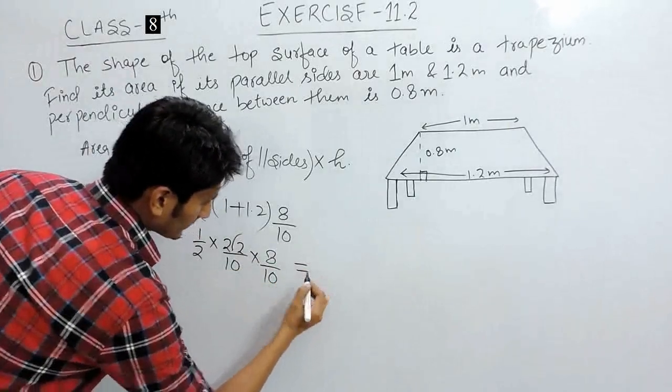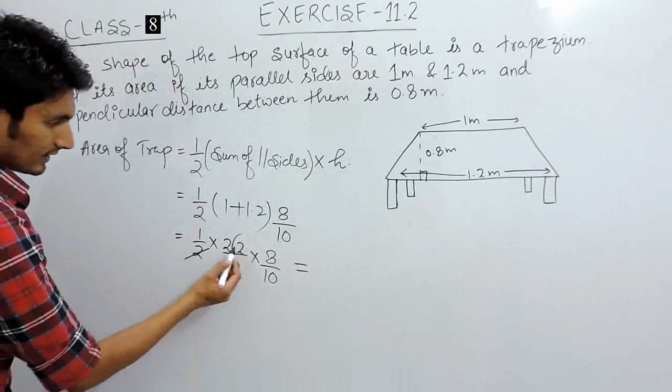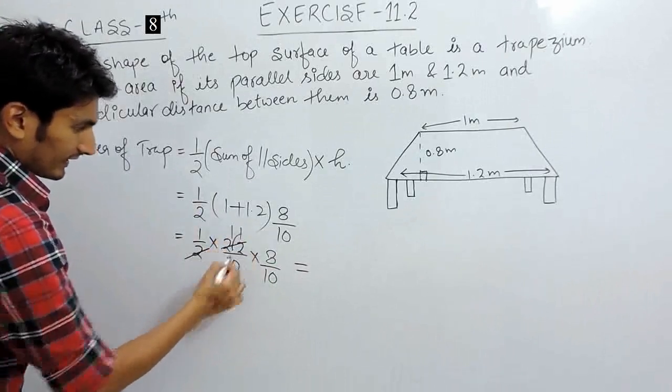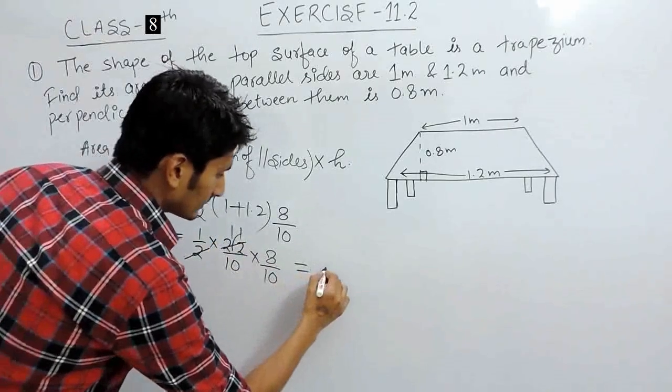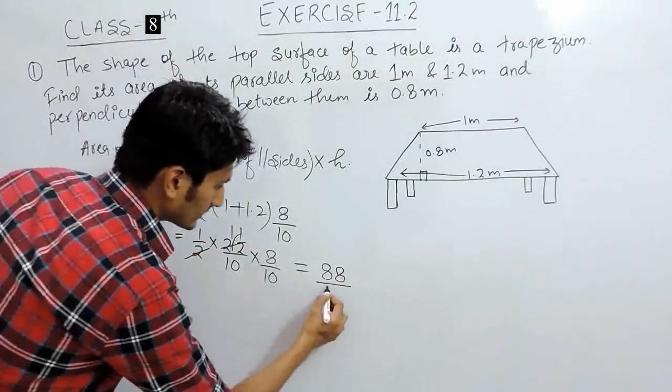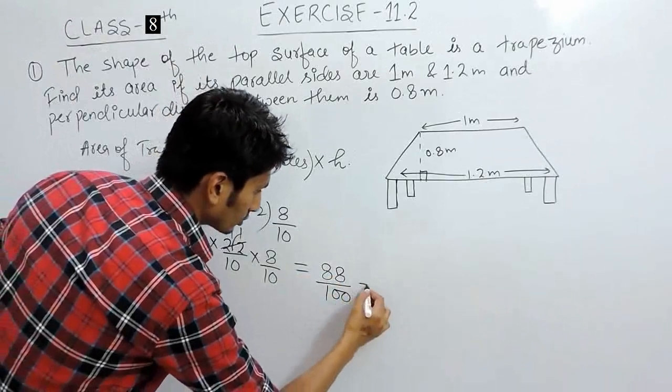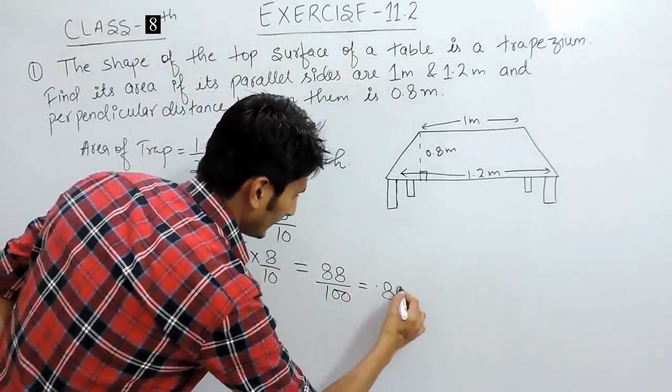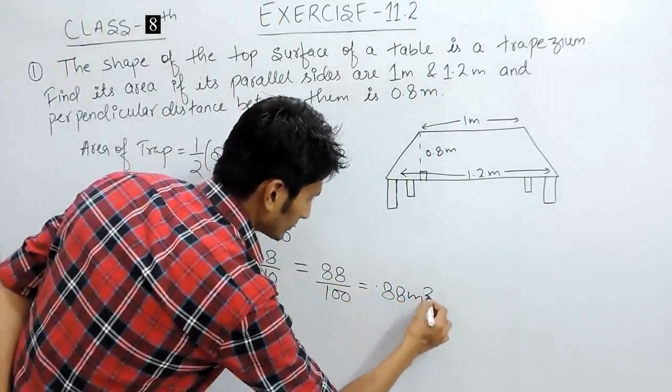Further solving this, this 2 can be cancelled 11 times. And 11 into 8 is 88 upon 10 into 10 is 100. So the area will be 0.88 meter square.